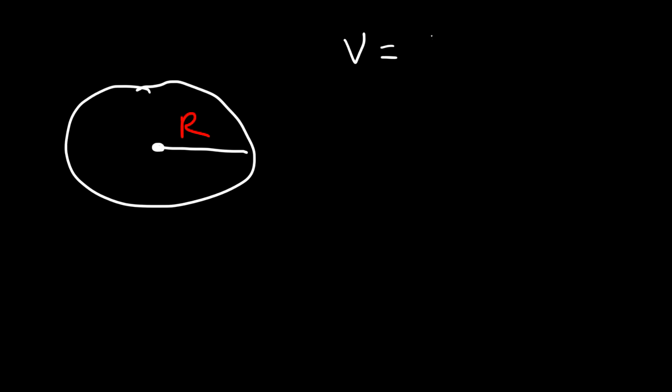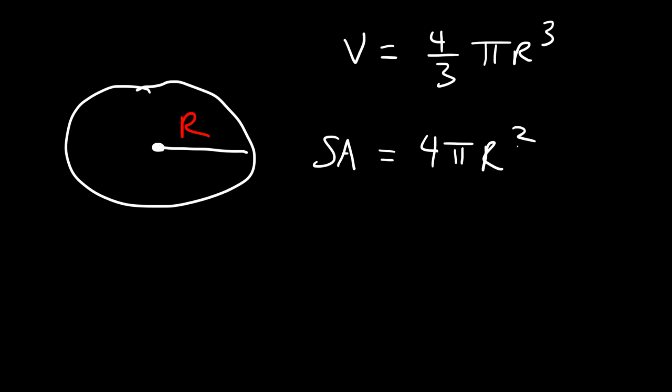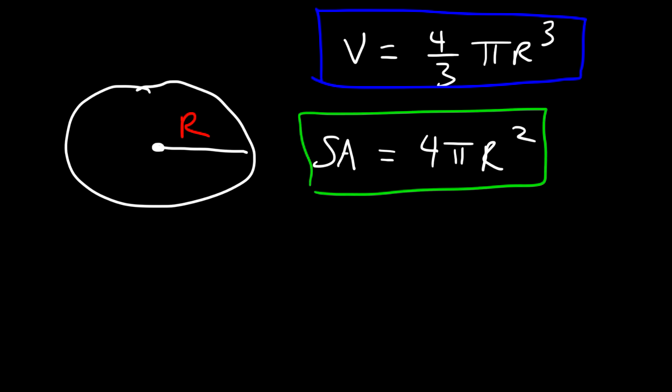In this video we're going to talk about how to find the volume of a sphere and the surface area of a sphere. So let's talk about the volume first. Let's say we have a sphere with radius r. To find the volume of the sphere, it's 4/3 pi r cubed. And to calculate the surface area, it's simply 4 pi times r squared. These are the two formulas that you need to know in reference to a sphere. If you know these equations, then you should be fine.